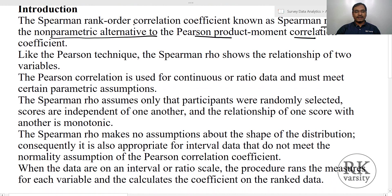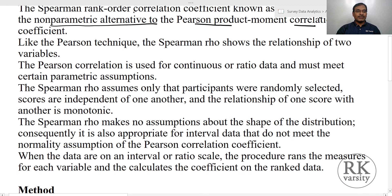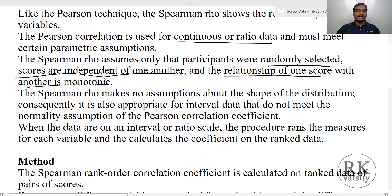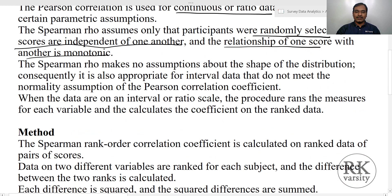Like Pearson's technique, the Spearman's rho shows the relationship between two variables. The Pearson correlation is used for continuous or ratio data and must meet certain parametric assumptions. Whereas the Spearman's rho assumes only that participants were randomly selected, scores are independent of one another, and the relationship between one score and another is monotonic. These are the three assumptions of Spearman's rank correlation.